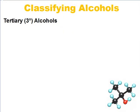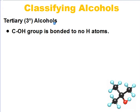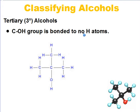For tertiary alcohols, you might have guessed by now — the C-OH group is bonded to absolutely no hydrogen atoms at all. When we look at that C-OH group, you can see that carbon is not bonded to any hydrogens directly. So this is a tertiary alcohol.